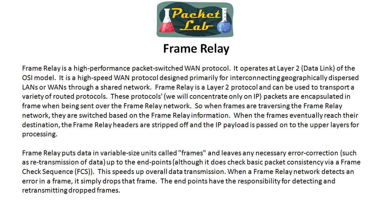The key point is that frame relay uses a variable-size unit, and that differs from a competing WAN protocol called ATM — Asynchronous Transfer Mode. ATM uses what they call cells, with a fixed cell size of 53 bytes. So every cell that ATM sends out is a fixed 53 bytes, whereas frame relay, depending on the size of the packet passed to it, is variable size. A small packet results in a small frame; a large packet results in a large frame. That's an important differentiator from other WAN protocols such as ATM.